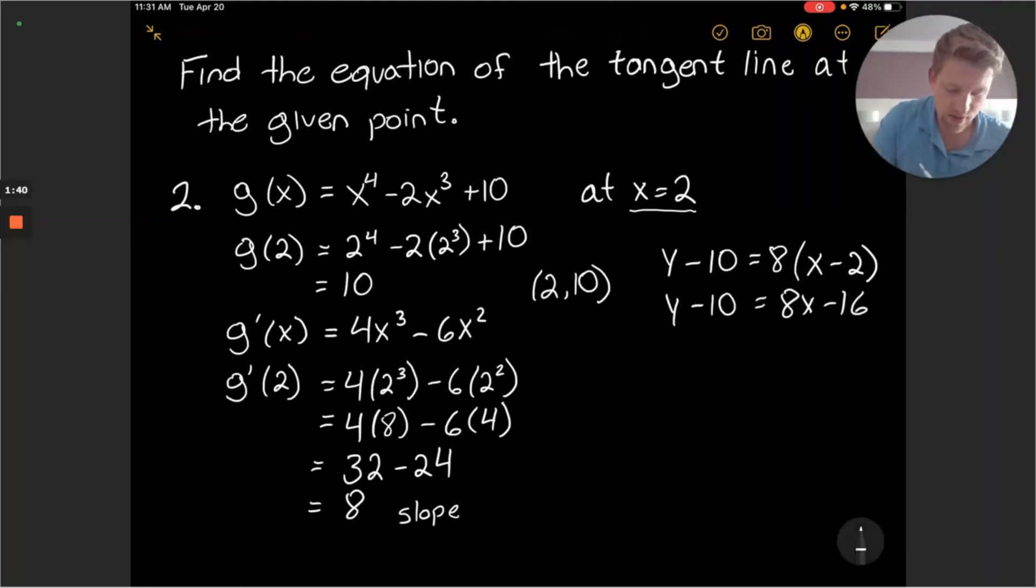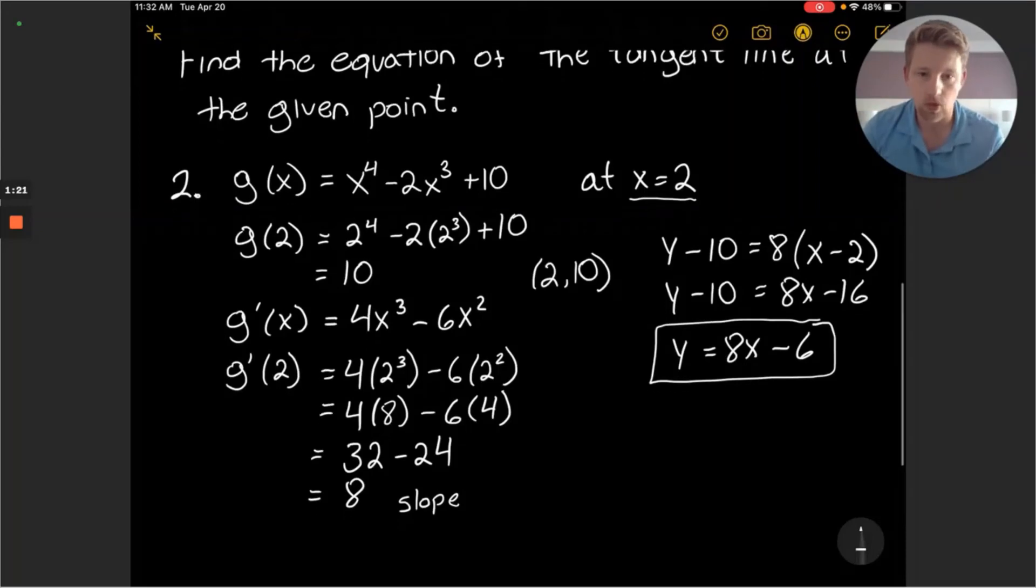And then add 10 on both sides to get y is equal to 8x minus 6, which will be the equation of the tangent line at x equals 2.